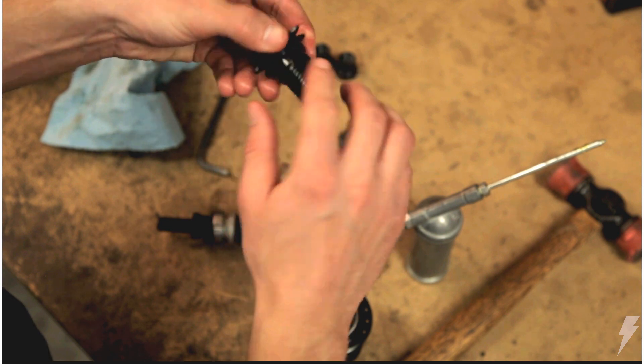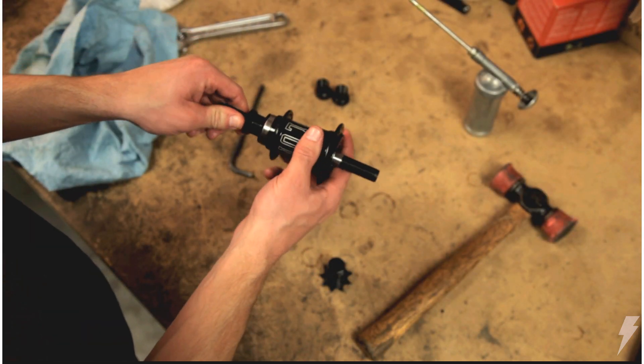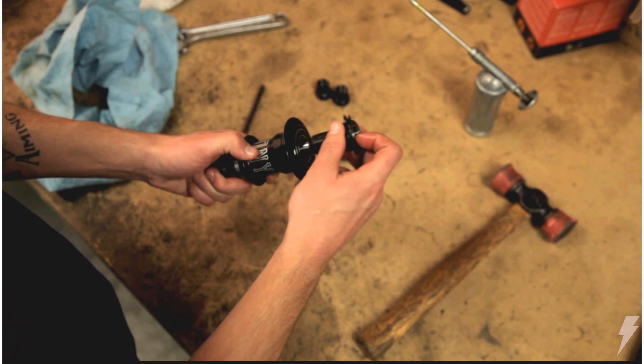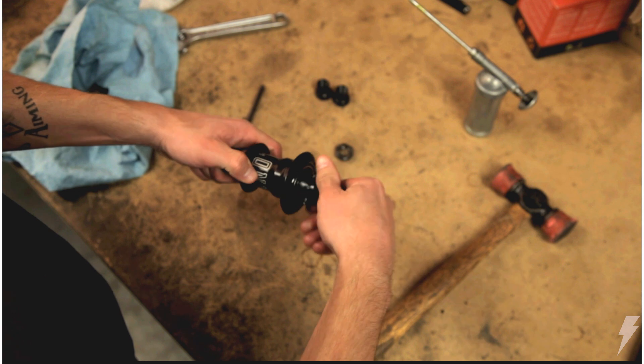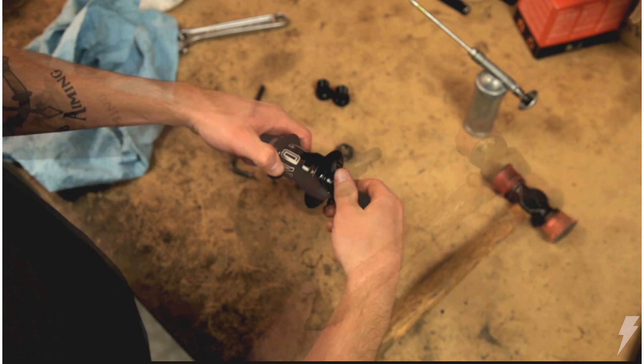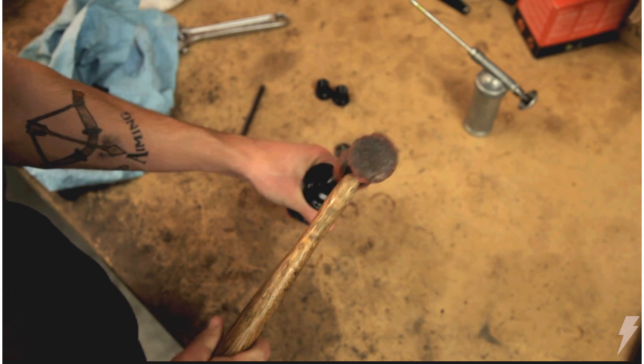Go ahead and apply grease to the driver threads and set it aside for now. Next is to reinstall the clutch and axle assembly inside the hub shell. Thread the driver in while pushing up on the axle assembly to get everything started and properly lined in place.